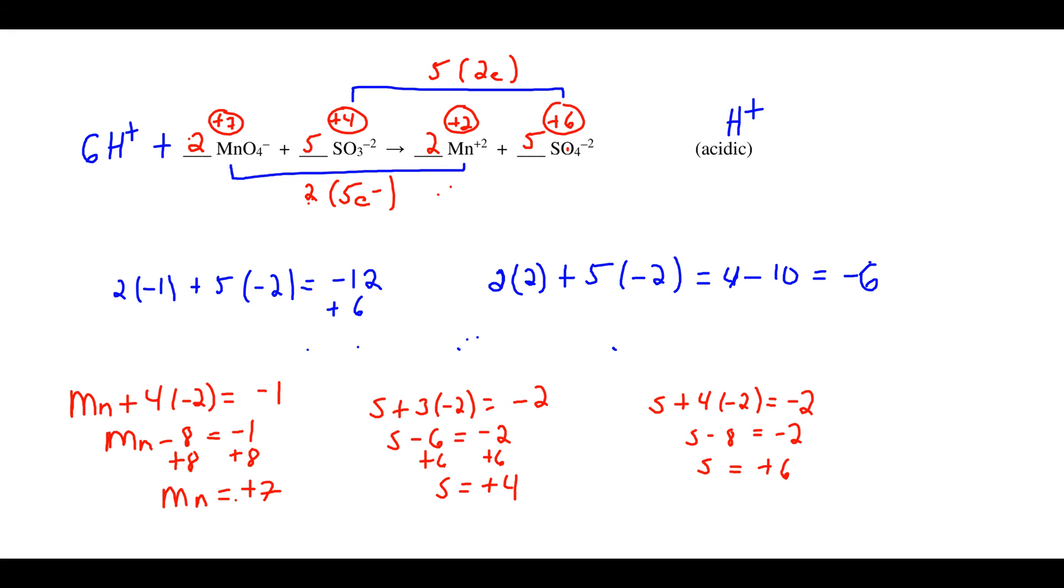Looking at the oxygens, we have 23 oxygens on the reactant side and 20 on the product side. So we're going to have to add three waters to the product side and that should balance the hydrogens as well. And it does. We have six hydrogens on each side.